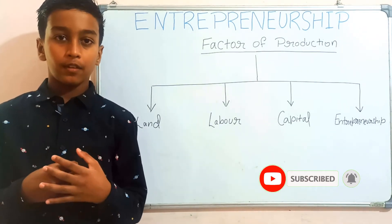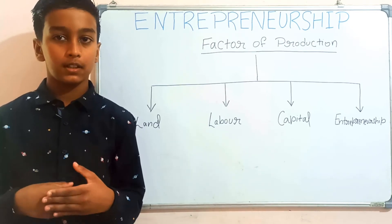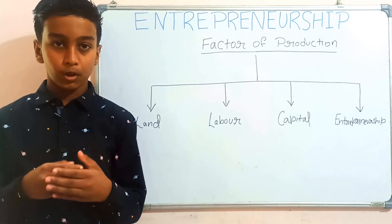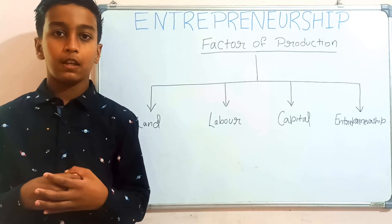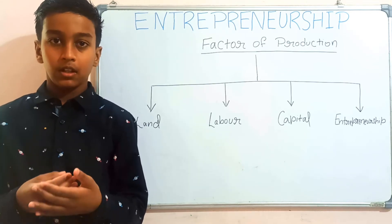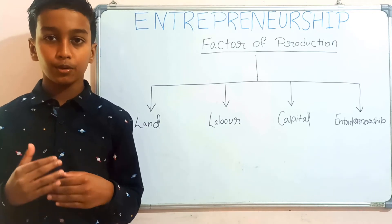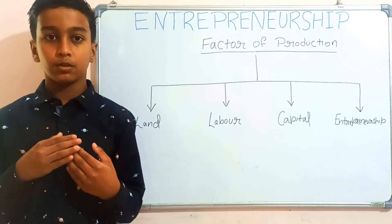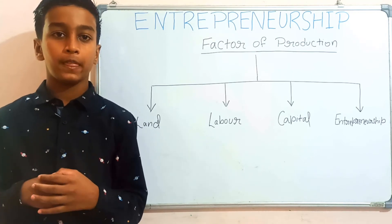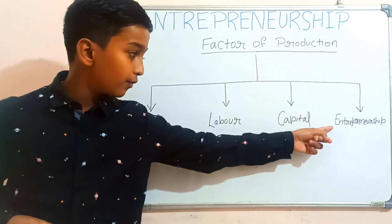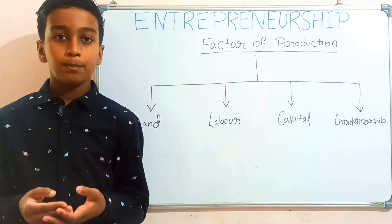Capital as a factor of production — capital goods refers to the money that is used to purchase the items that are used to produce goods or services. For example, a company that purchases a factory to produce goods, or a truck purchased to do construction, are considered to be capital goods.